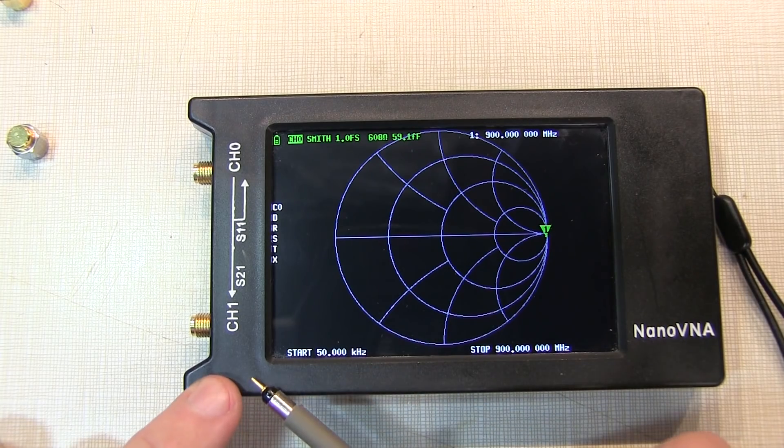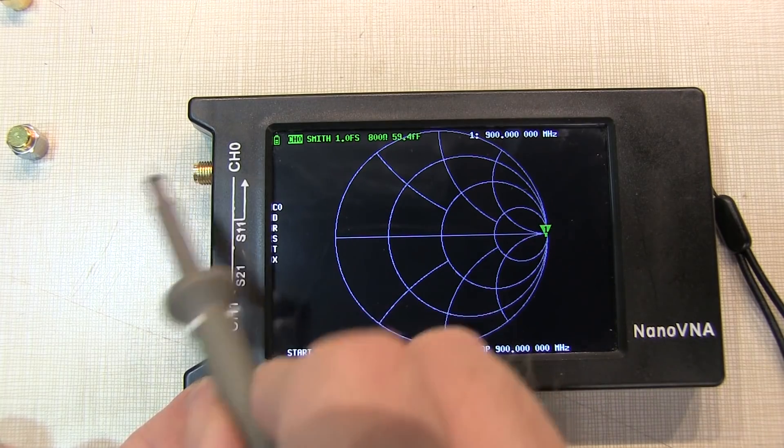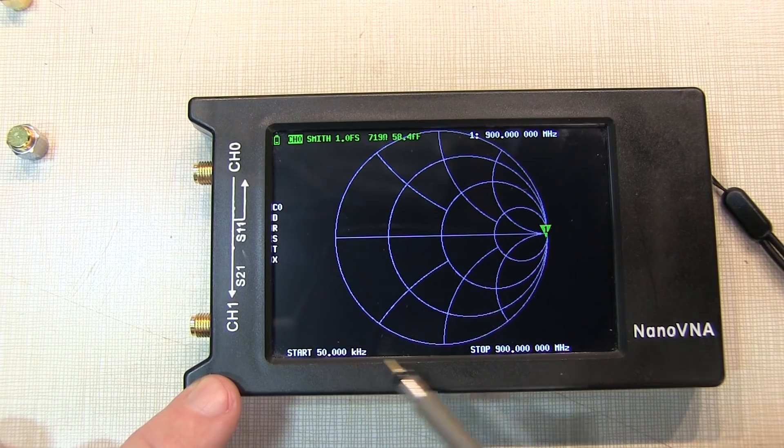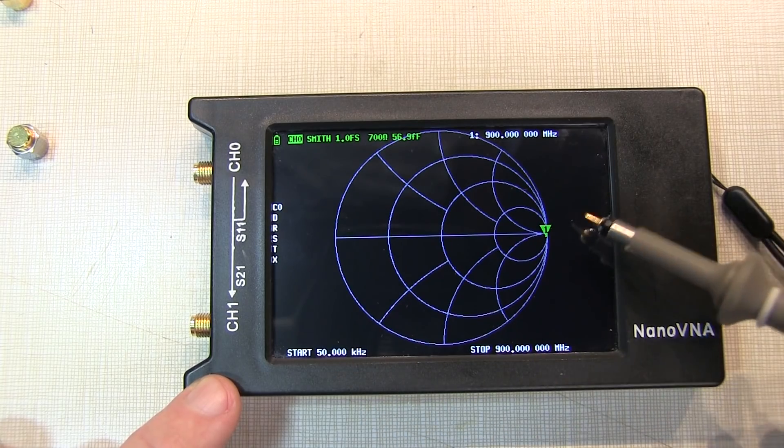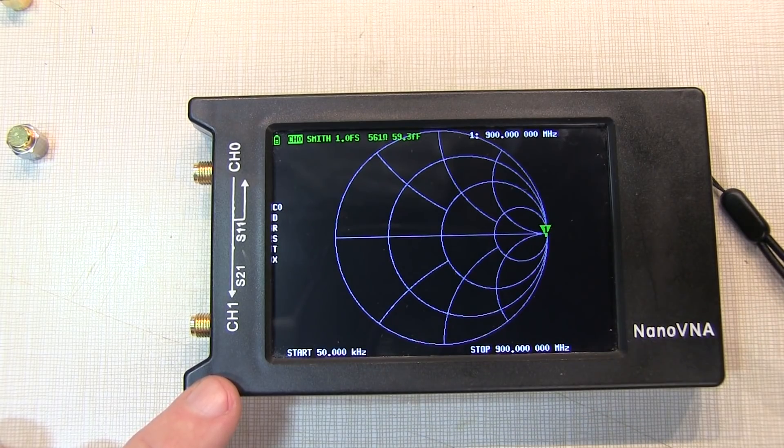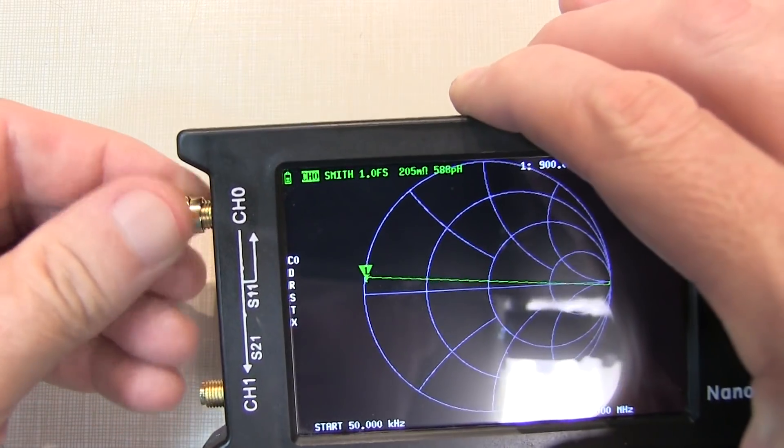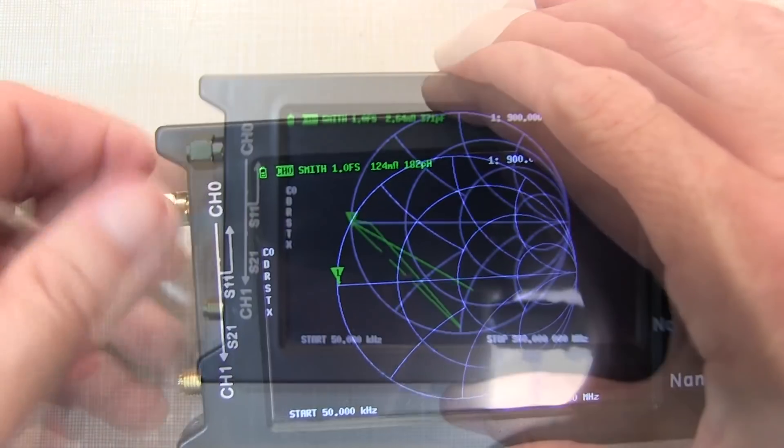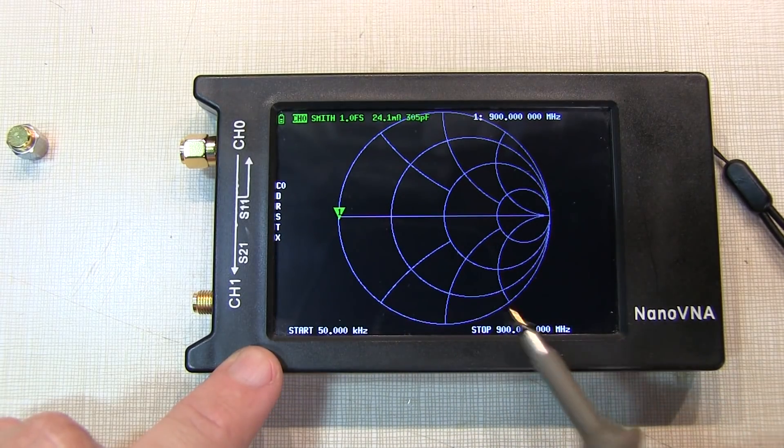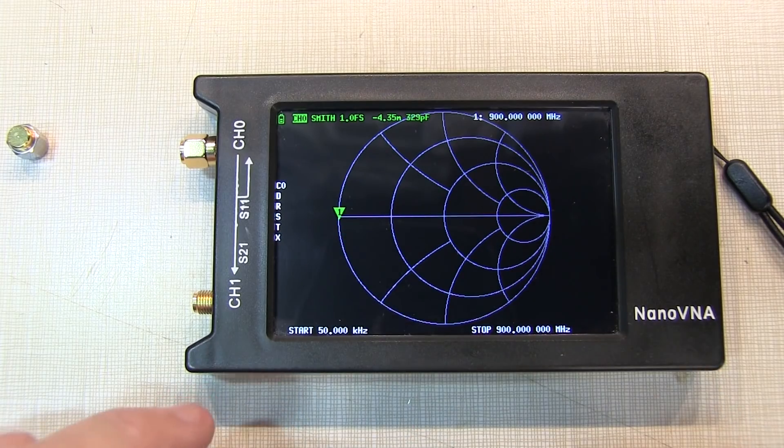So here I've got the Nano VNA powered up using the default calibration. And I've got nothing connected to the input. And we can see that our measurement point over this 50 kHz to 900 MHz frequency range is way out over here, which indicates that it's a pure open circuit even over this 900 MHz frequency range. Now if we connect a short circuit to channel 0 here and take a look at the Smith chart, we can see that for this whole 900 MHz frequency range, we're sitting right there at the short circuit position on the VNA.